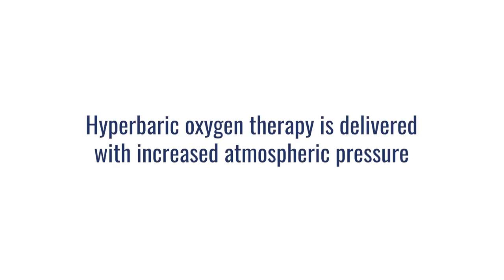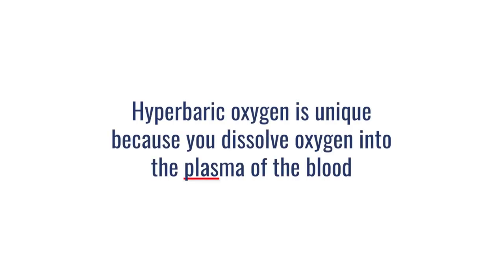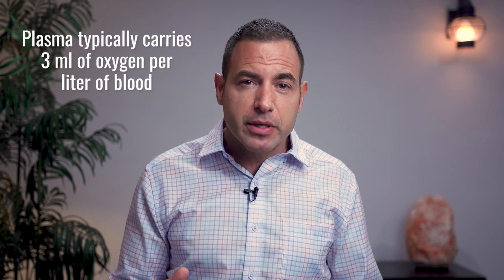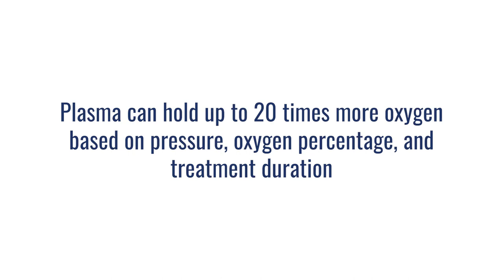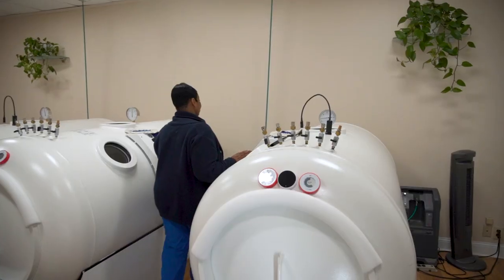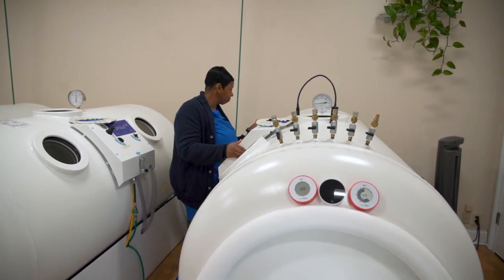Hyperbaric oxygen therapy is entirely about changing atmospheric pressure. When you change atmospheric pressure, you can certainly fulfill 100% oxygen saturation of your red blood cells. But what makes hyperbaric truly unique is that you're now dissolving oxygen into the plasma of the blood. The plasma carries very little oxygen under normal circumstances — specifically, three milliliters of oxygen per liter of blood. With hyperbaric, depending on the pressure used, the percentage of oxygen you're breathing, and the duration in the chamber, that plasma reservoir becomes capable of carrying up to 20 times more oxygen. So while EWOT does deliver an increase in oxygen, it's nowhere near the amount that a hyperbaric system can create.